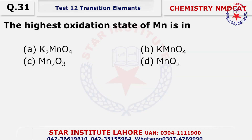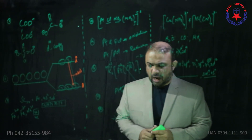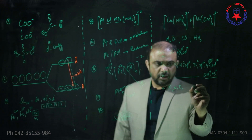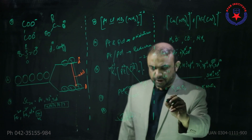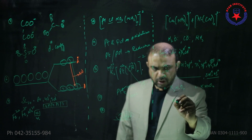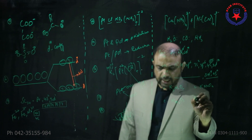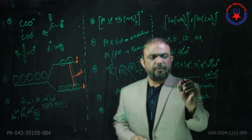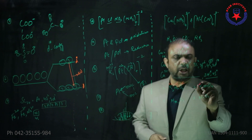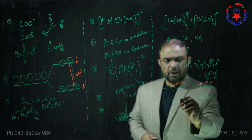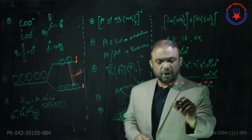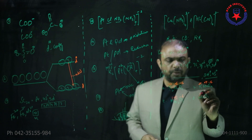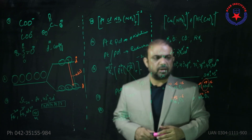Question thirty-one: the highest oxidation state of manganese — in all compounds you have to find the oxidation state. Option A: K2MnO4 — potassium is +2, so manganese here is +6. Option B: KMnO4 — manganese is +7. Option C: Mn2O3 — manganese is +3. Option D: MnO2 — manganese is +4. So the highest oxidation state is +7, observed in option B, KMnO4.